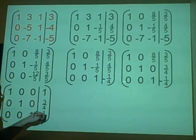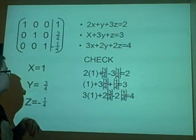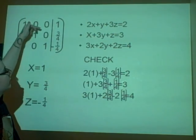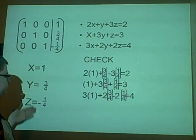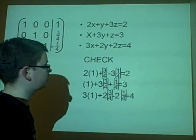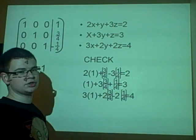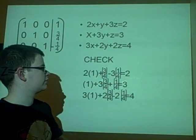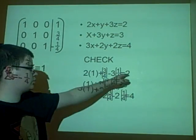And now to check that it actually works, so we've got our x value, our x as 1, our y as 3 quarters, and our z as minus a quarter. And we can check it works by using the original equations which we've got here, and we can substitute the values in. As you can see, 2 times 1 plus 3 quarters minus 3 times a quarter is 2.